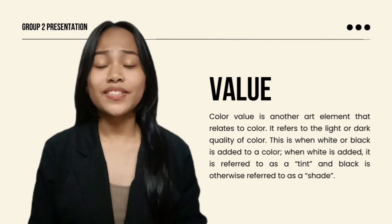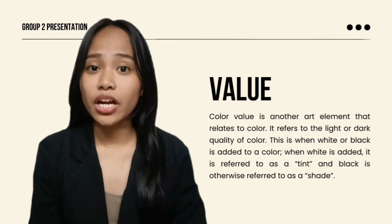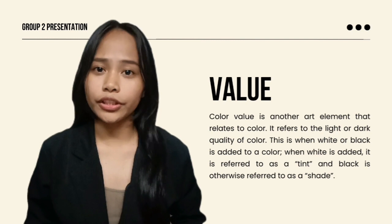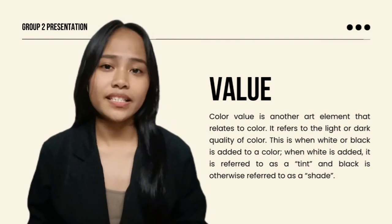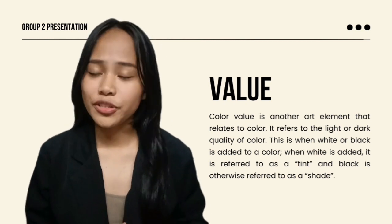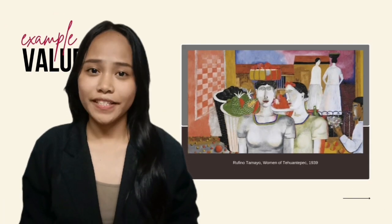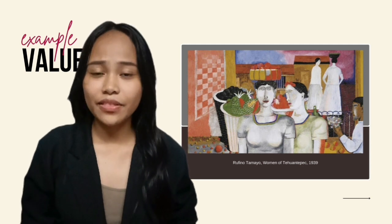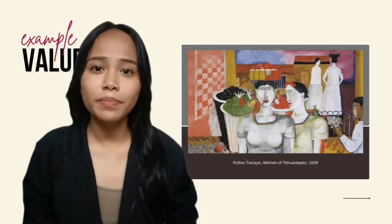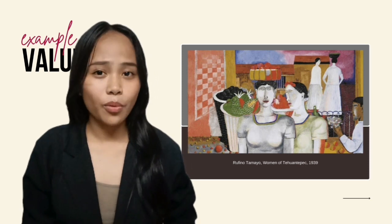Color value is another art element that relates to color. It refers to the light or dark quality of color — when white or black is added to a color. When white is added, it is referred to as a tint, and black is referred to as a shade. In this example, Rufino Tamayo adds white to a color to create a tint in the clothes of the women, one of the baskets, and in the checkerboard on the wall.